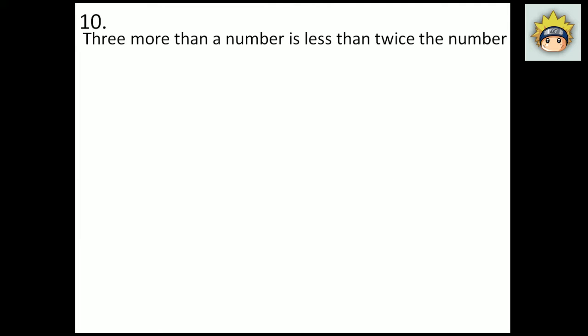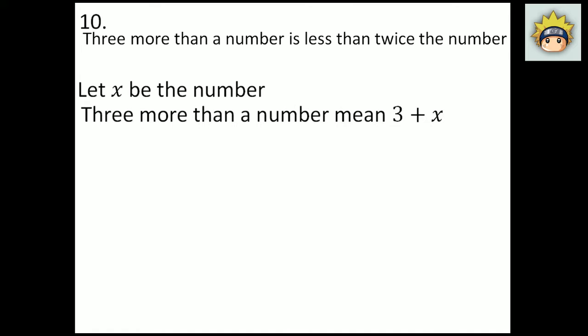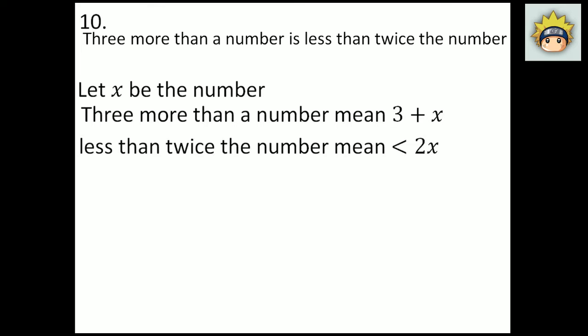Number 10. It says: 3 more than a number is less than twice that number. Let x be the number. 3 more than a number means 3 plus x, because more than refers to addition. Less than twice that number — less than is the less than symbol, and twice means 2 times, so that is 2x. Putting this in the inequality: 3 plus x is less than 2x. Subtract x from both sides and you get 3 is less than x.